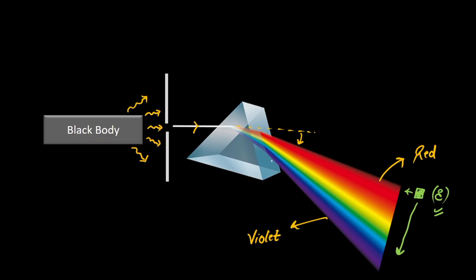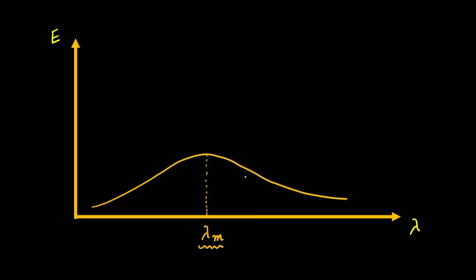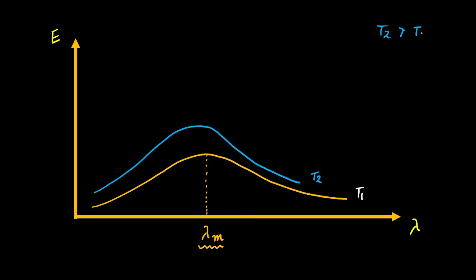Let's say this entire experiment was done when the temperature of the black body was T1. So this particular graph corresponds to temperature T1 — meaning when the temperature was T1, the wavelength corresponding to the maximum energy is lambda m. Now, if we increase the temperature to T2, where T2 is greater than T1, the graph would look something like this. From this graph, you can clearly see that lambda m in this case is lesser.